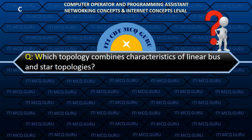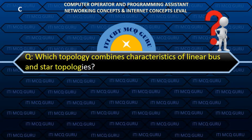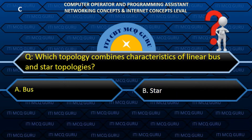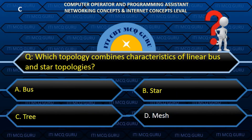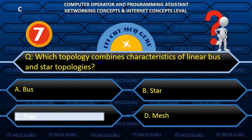Which topology combines characteristics of linear bus and star topologies? C. Tree.